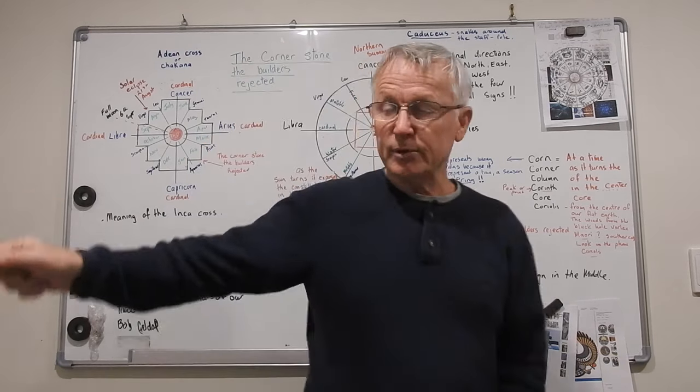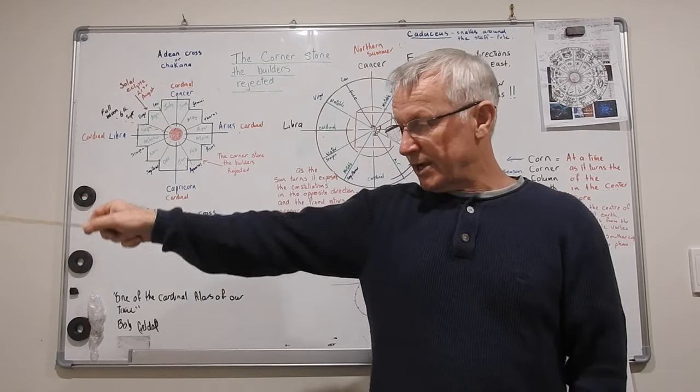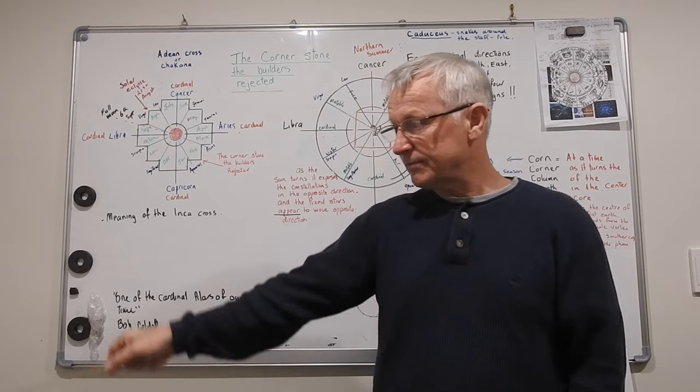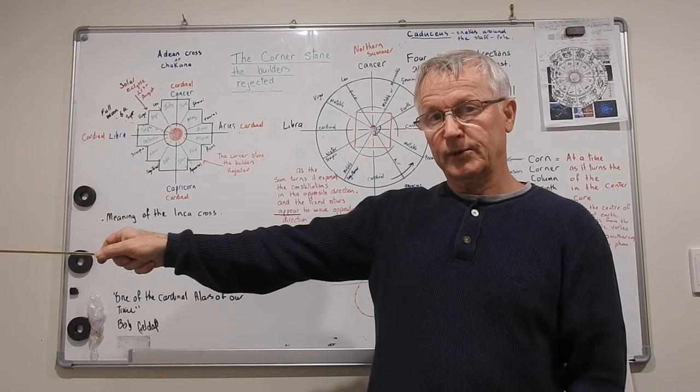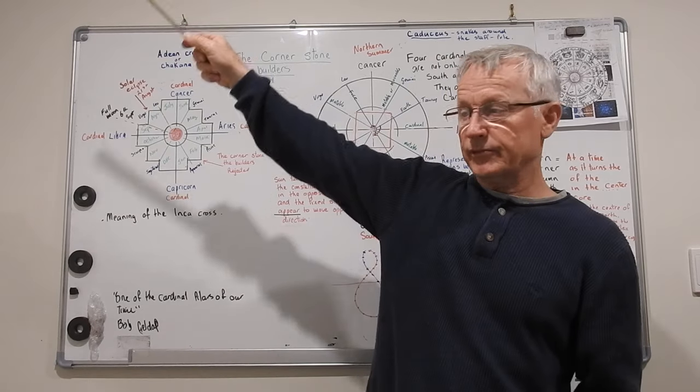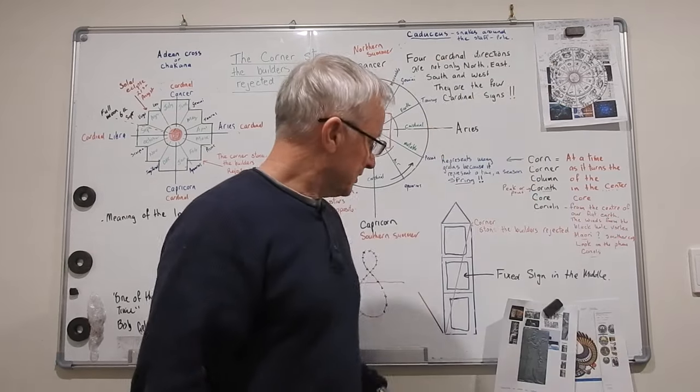So the sun is at equilibrium, it's going down for three months, it comes up for three months, equilibrium, then it goes three months up, three months down. This is what this represents.